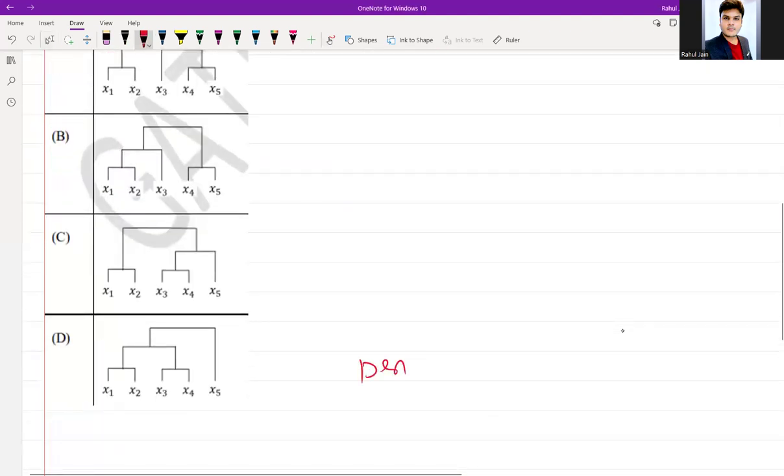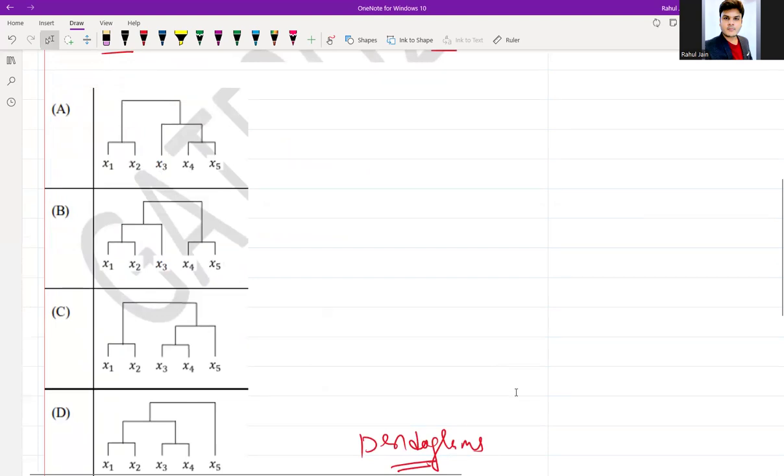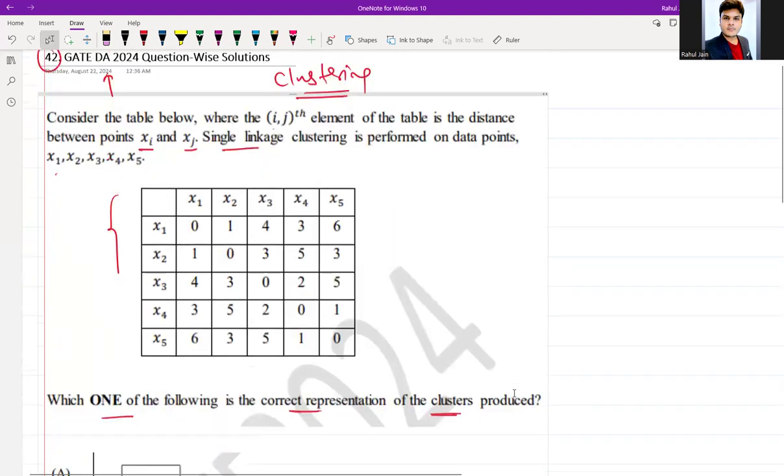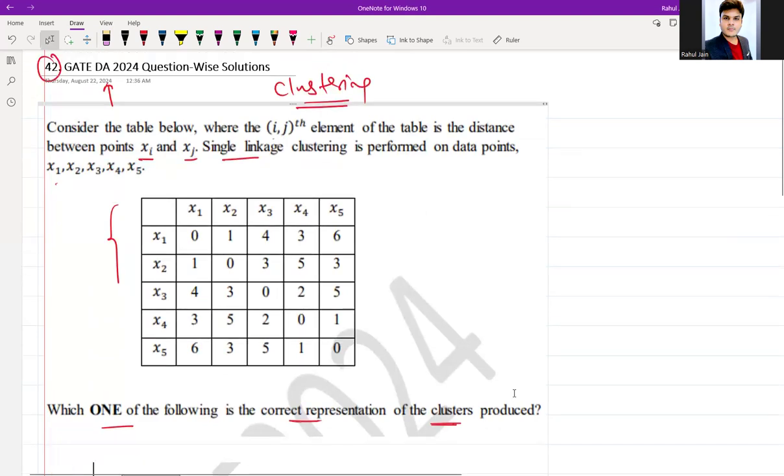You can see these dendrograms - they all are called dendrograms, that is just a tree-like structure which we use in hierarchical clustering. Now if you see here, we can directly solve using common sense, we are not going to apply any technical part.